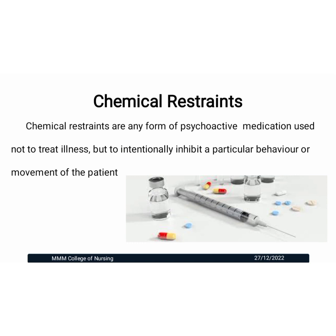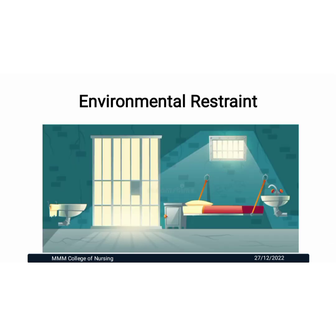Chemical restraints are any form of psychoactive medication used not to treat illness, but to intentionally inhibit a particular behavior or movement of the patient. Environmental restraint: the patient can walk or roam around freely but cannot come out of the room. In this condition, we must make sure the patient's room does not contain any harmful devices — especially metal forks, knives — all those things cannot be kept in the patient's room. This is very commonly used for violent patients.